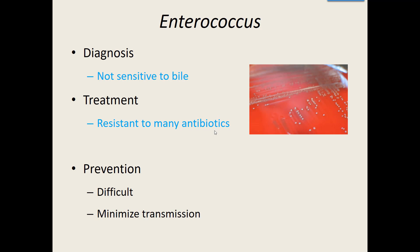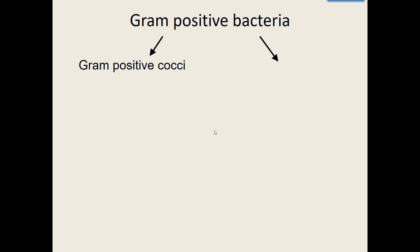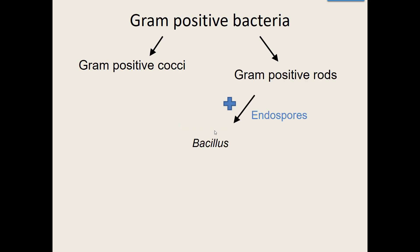Now onto a completely different shape — our gram-positive bacilli, our gram-positive rods — and we divide them up into whether they have an endospore or not. We have two genus of bacteria that do make endospores: the Bacillus and the Clostridium, so we're going to start with those.